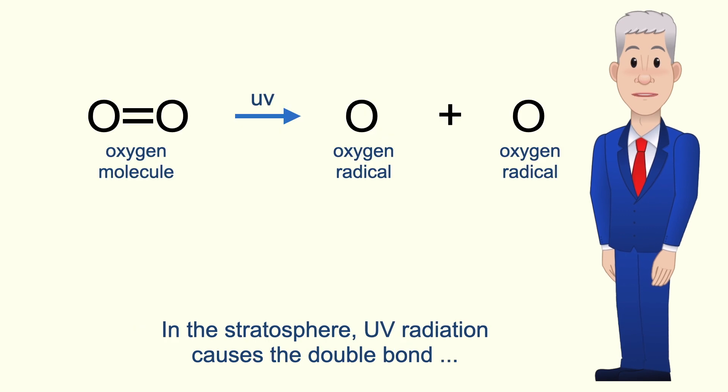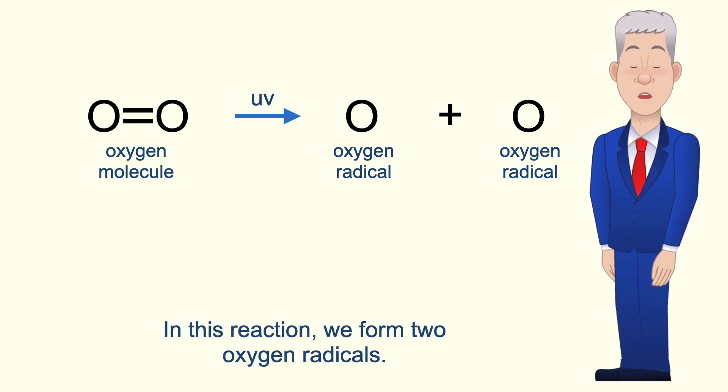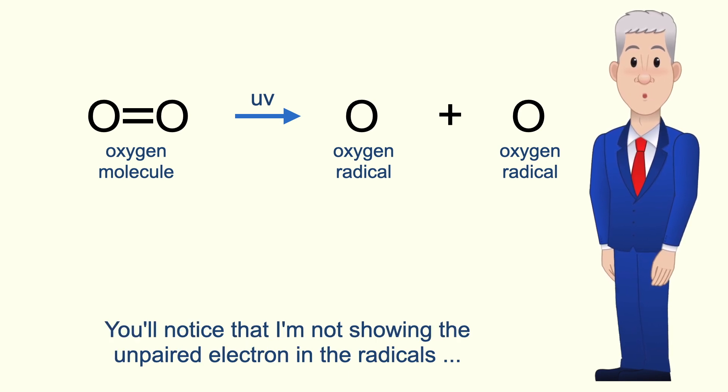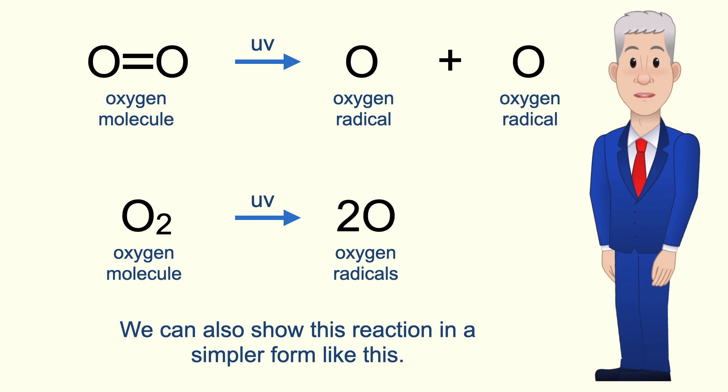In the stratosphere UV radiation causes the double bond in oxygen molecules to break like this. In this reaction we form two oxygen radicals and remember that a radical is a species with an unpaired electron. You'll notice that I'm not showing the unpaired electron in the radicals but you need to remember that they are still radicals. We can also show this reaction in a simpler form like this.